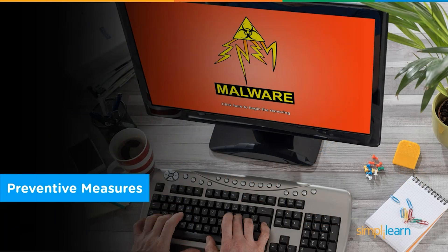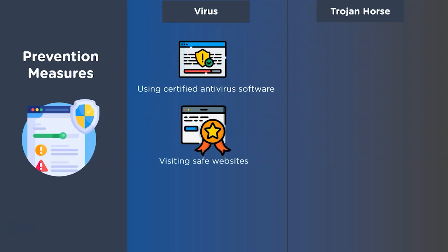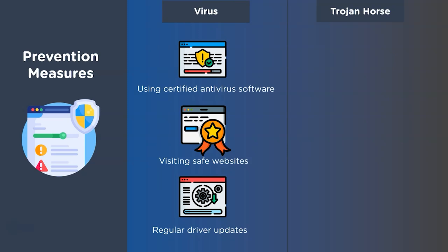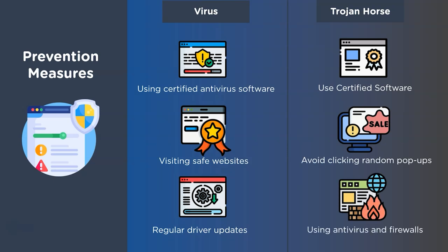Here are some points on how to prevent virus and trojan attacks. The most basic way of virus protection is using antivirus software and performing regular virus scans; having more than one antivirus provides better protection. Avoid visiting uncertified websites to prevent virus entry. Use regular driver and system updates as well. For trojans, use certified software from legal sites, avoid clicking random pop-ups seen on the internet, and use antivirus software and firewalls for protection against trojan horses.